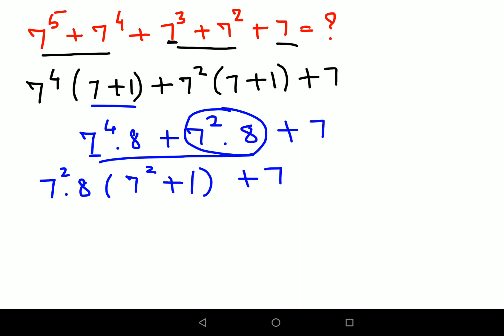So now this 7 square is, as we all know, 7 square value is 49 into 8, and this bracket comes out to be 49. 7 square is 49 plus 1 gets you 50 plus 7.